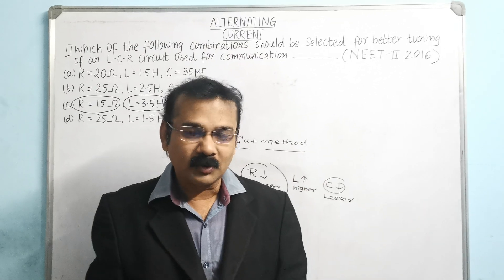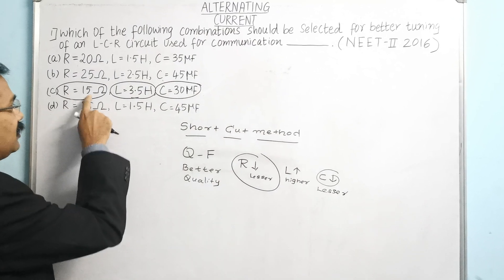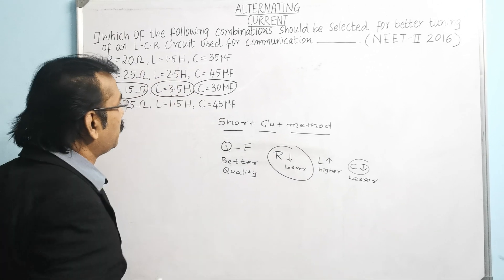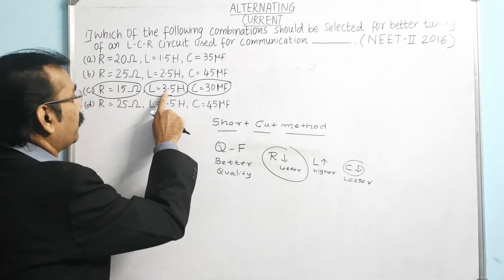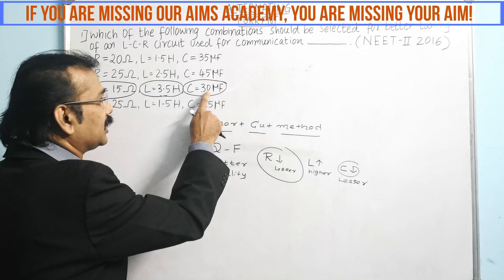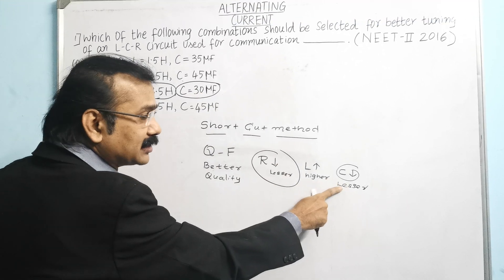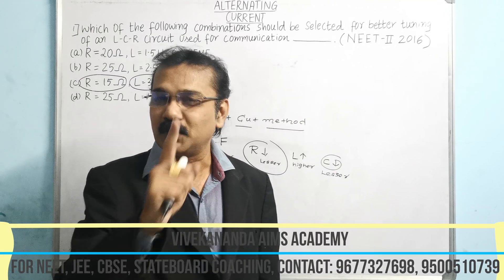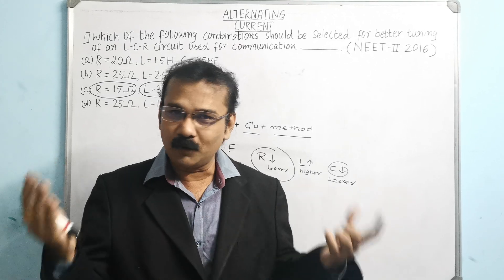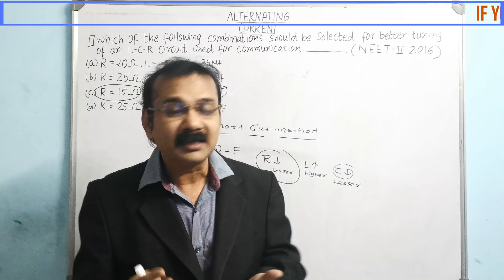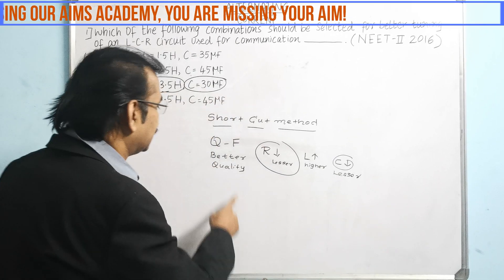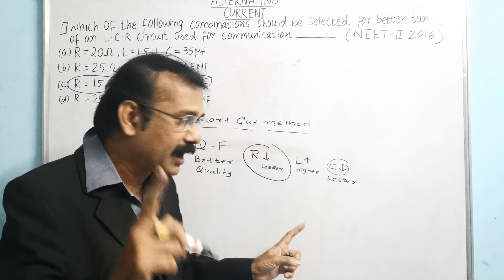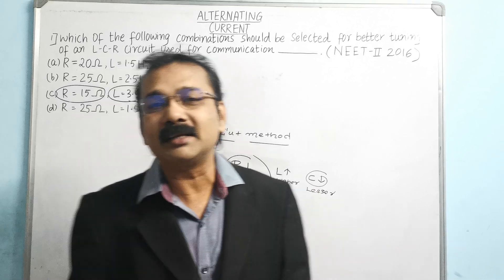I hope you got the answer now. For a better quality factor, we have R = 15, which is the least of the four. L = 3.5 is the highest, and C = 30 which is lower. That is why for a better quality factor, option C is the correct answer. Within a fraction of a second, we got the answer without using any formula. The trick is: R should be lesser, L should be higher, C (capacitance) should be lesser, inductance should be higher, and resistance should be lesser.